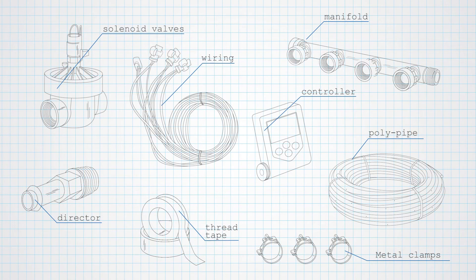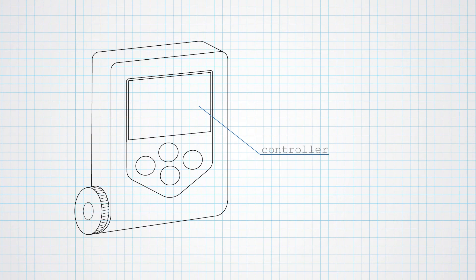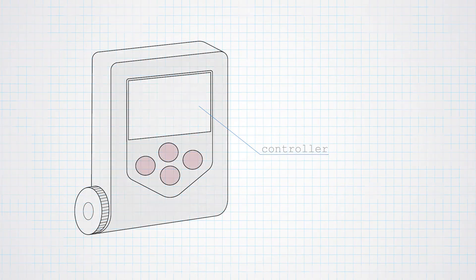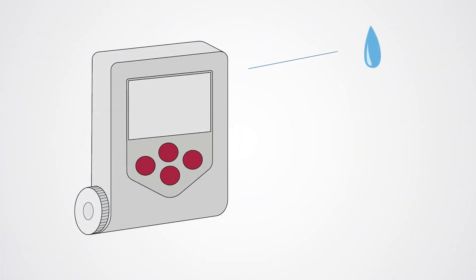To get started, you'll need a controller. The controller tells the system what to do, how much water to give your garden, when, how often and to what zones.